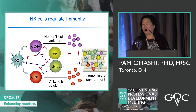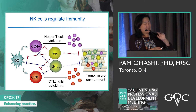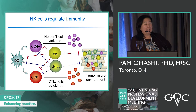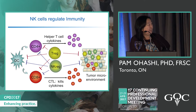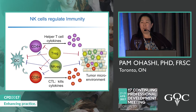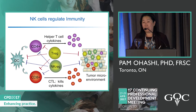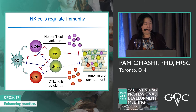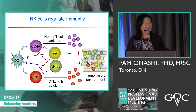In summary, we propose considering another population of regulatory cells — NK regulatory cells or innate lymphoid regulatory cells — that seem to act very similarly to conventional T regulatory cells in ovarian cancer.